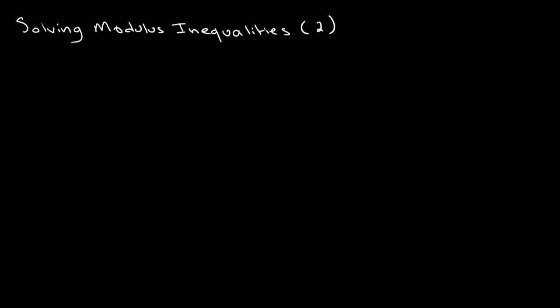So let's say for example that we have the absolute value of 2x plus 1, and this is greater than or equal to the absolute value of 3 minus x. We won't be able to solve this in the same way we solved our last inequalities where there was only an absolute value on one side, so I'll be showing you the method for questions like this.